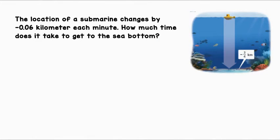The location of a submarine changes by negative 0.06 kilometer each minute. How much time does it take to get to the sea bottom? The sea bottom is located at negative three-fourths kilometers. We also know that the submarine's location changes negative 0.06 kilometers each minute. So in order to find how much time it takes, we're going to break up negative three-fourths into groups of negative 0.06. We will use division.